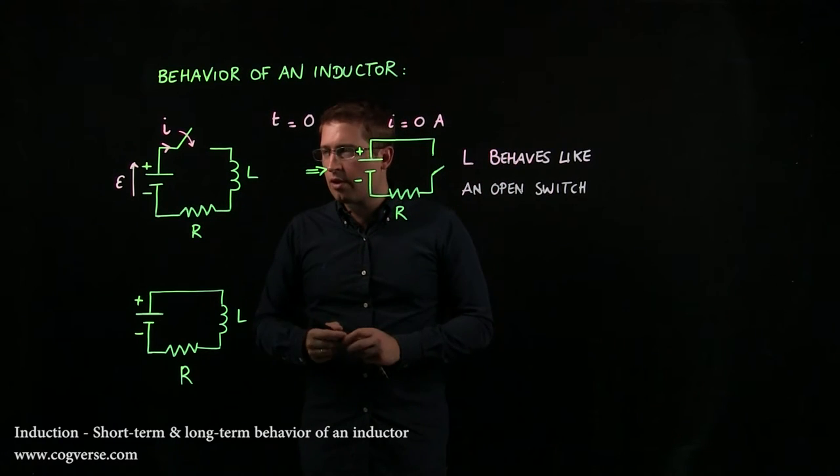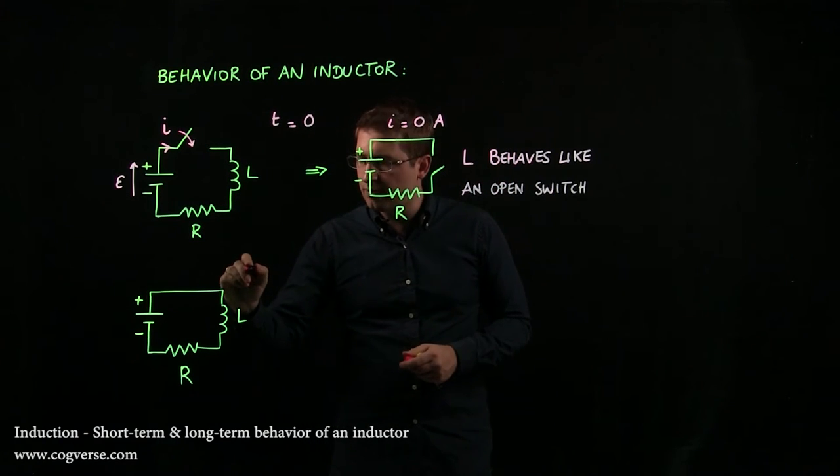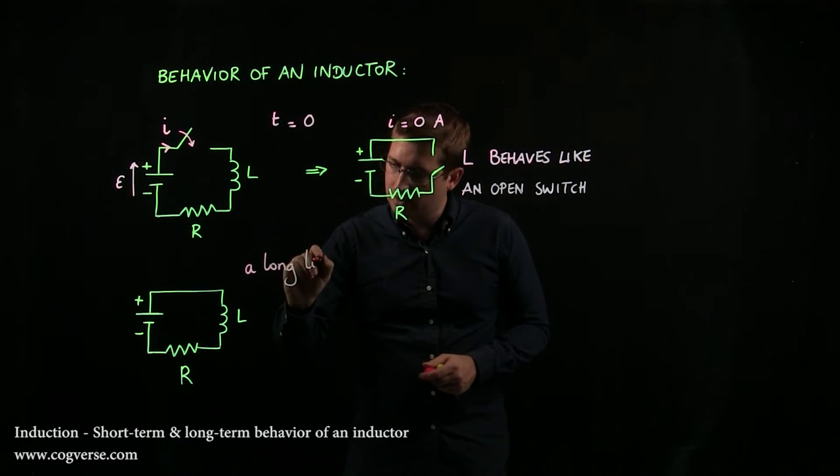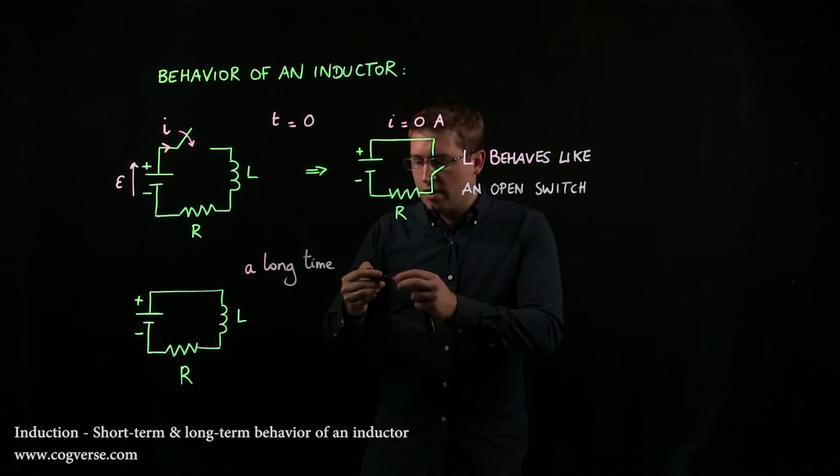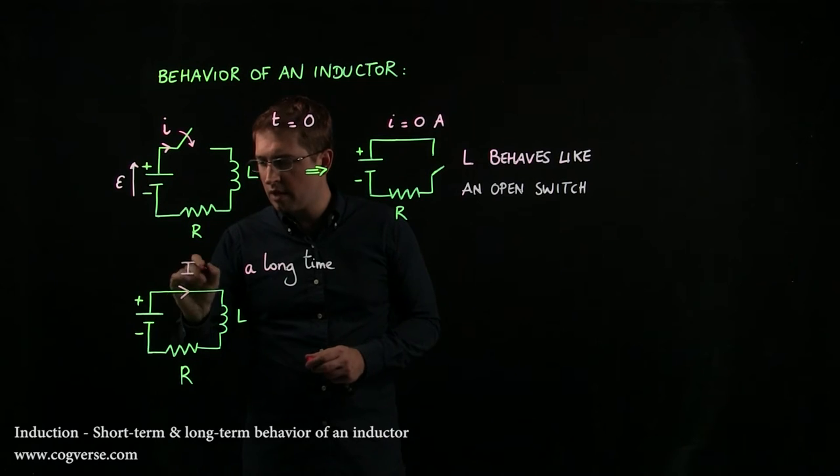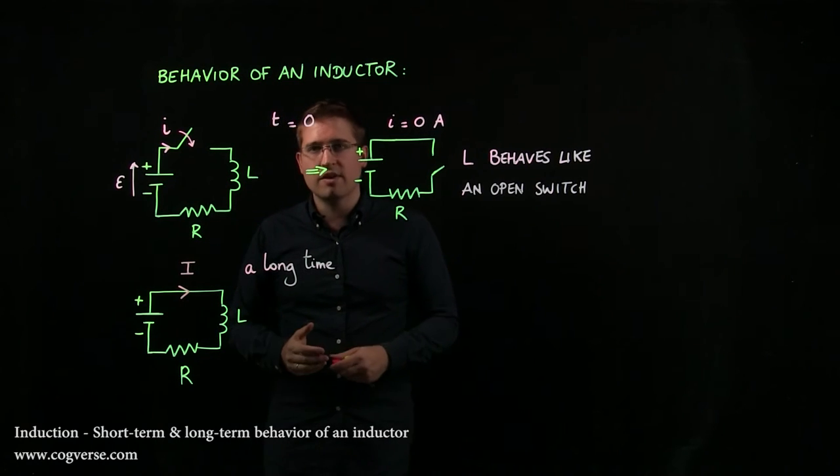So that's at t equals zero. Now let's wait after a long time and see what happens. Well, after a long time, we said that the current flowing through the circuit is going to reach a steady value.